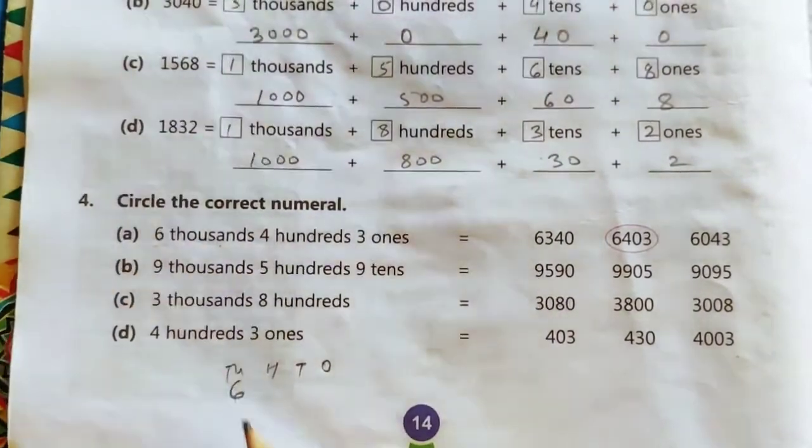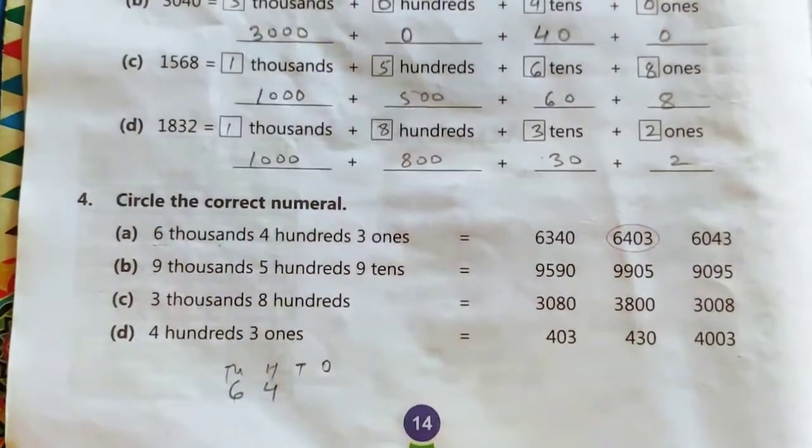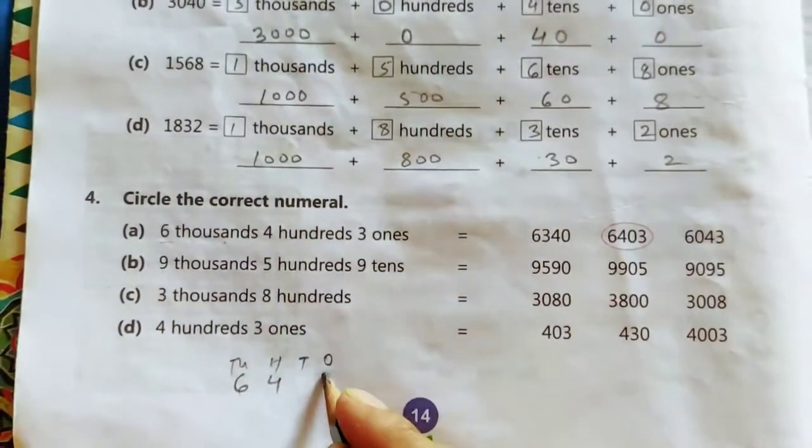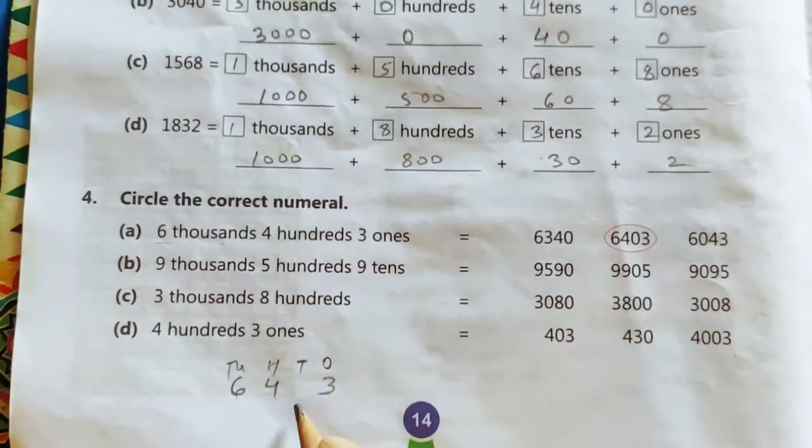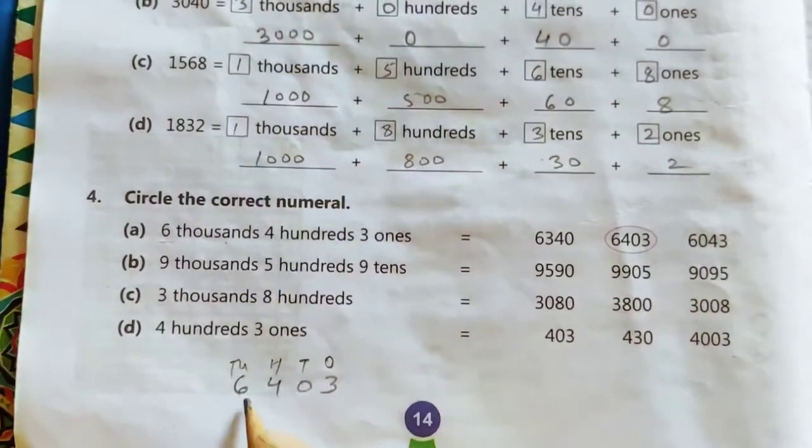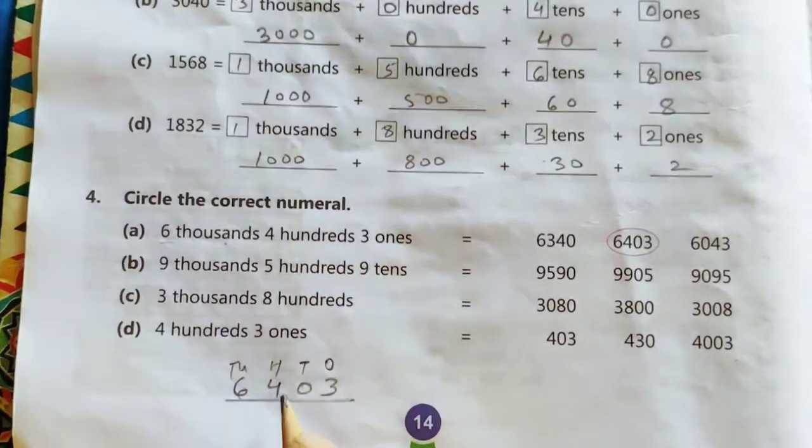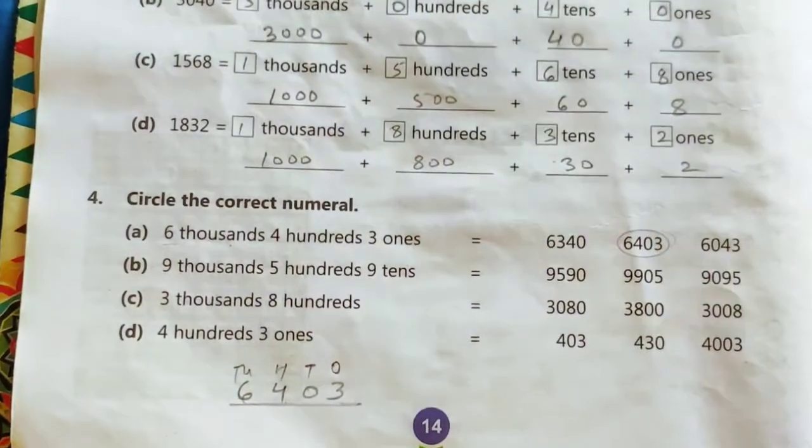So 6 in the thousands place, 400, 4 in the hundreds place, 3 ones, 3 in the ones place. So tens place is vacant. So we will write 0 here. So it will become 6,403. So this is the correct answer.